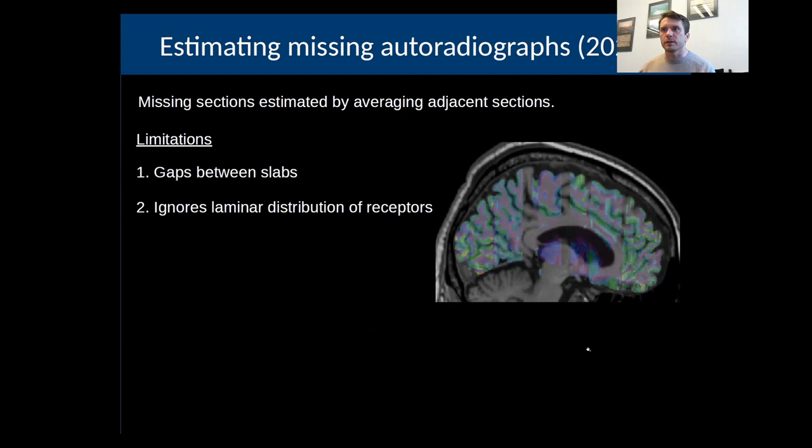This has significant limitations. One is that it doesn't address these big gaps between the slabs and it also ignores the laminar distribution of the receptors. It's sort of a more subtle point and you can't just see it here, but it is an important issue. It's a complicated issue and I won't go into it unless anybody's curious.